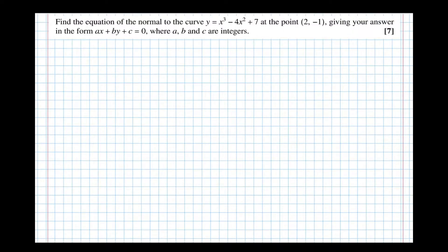In this video we're going to have a look at finding the equation of a normal to a curve. So this question asks us to find the equation of the normal to the curve y = x³ - 4x² + 7 at the point (2, -1), giving your answer in that particular form there.